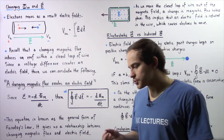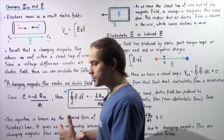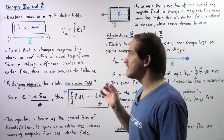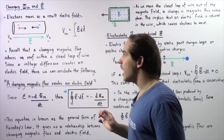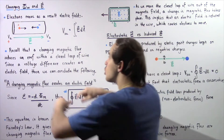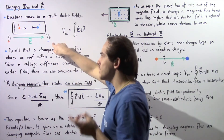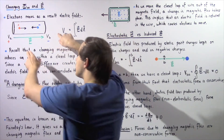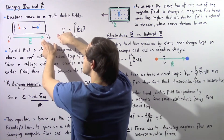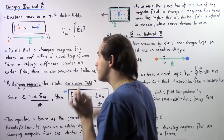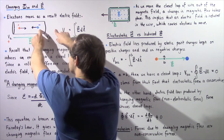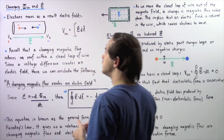In an earlier lecture on our discussion of the relationship between voltage and electric fields, we essentially said that the reason electrons flow inside a conducting wire is because of a voltage difference that exists between two ends of that conducting wire. This voltage difference essentially creates an electric field in which the electric field lines flow from the higher potential, the positive end, to the lower potential, the negative end. It's this electric field that essentially creates an electric force that forces our electrons to move along our conducting wire.